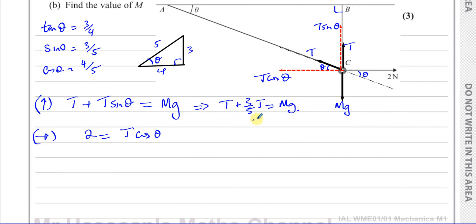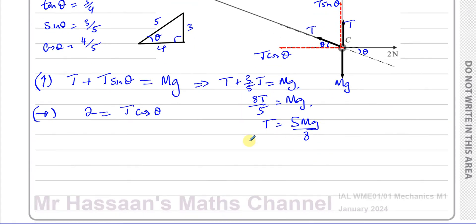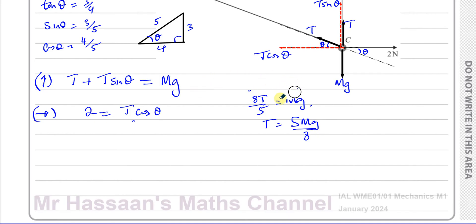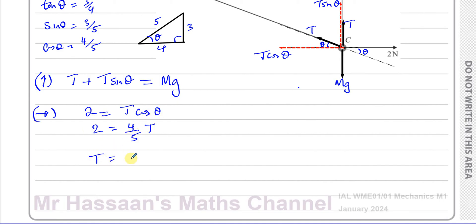From the horizontal equation: 2 = T cos θ = T × (4/5), so T = (2 × 5)/4 = 10/4 = 2.5 newtons. I know cos θ = 4/5 from our 3-4-5 triangle. So T = 2.5 N.